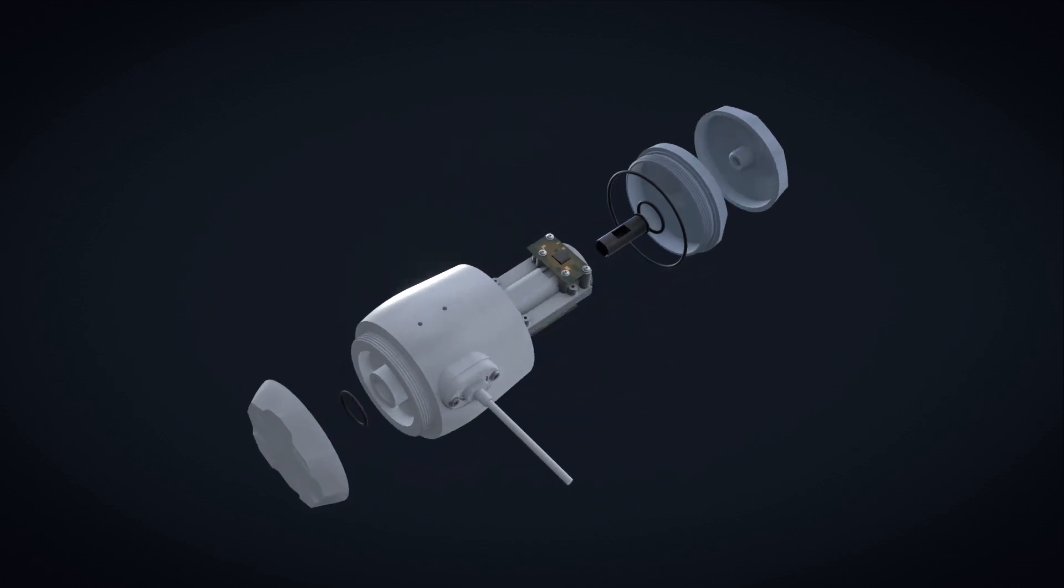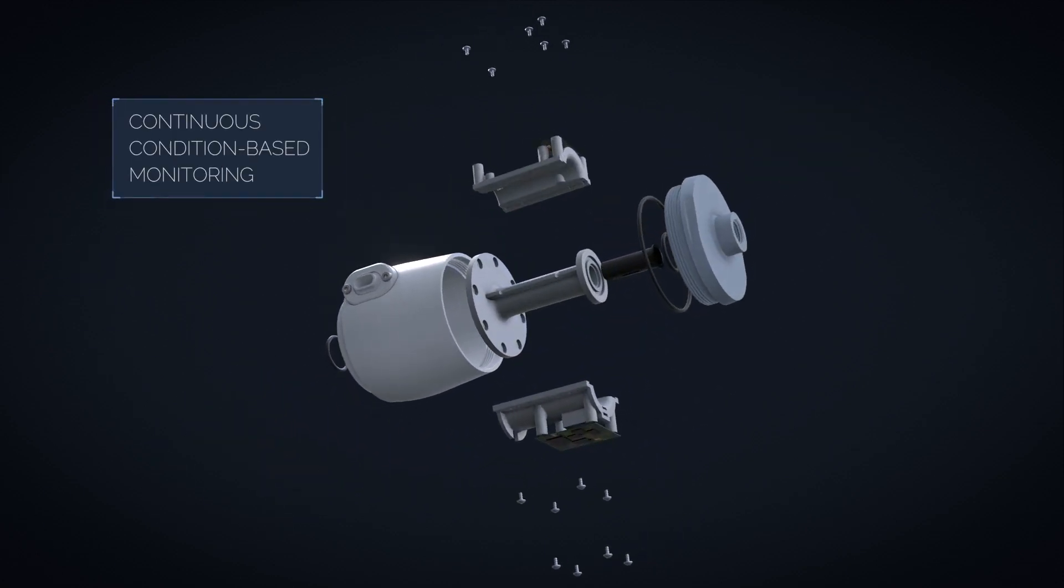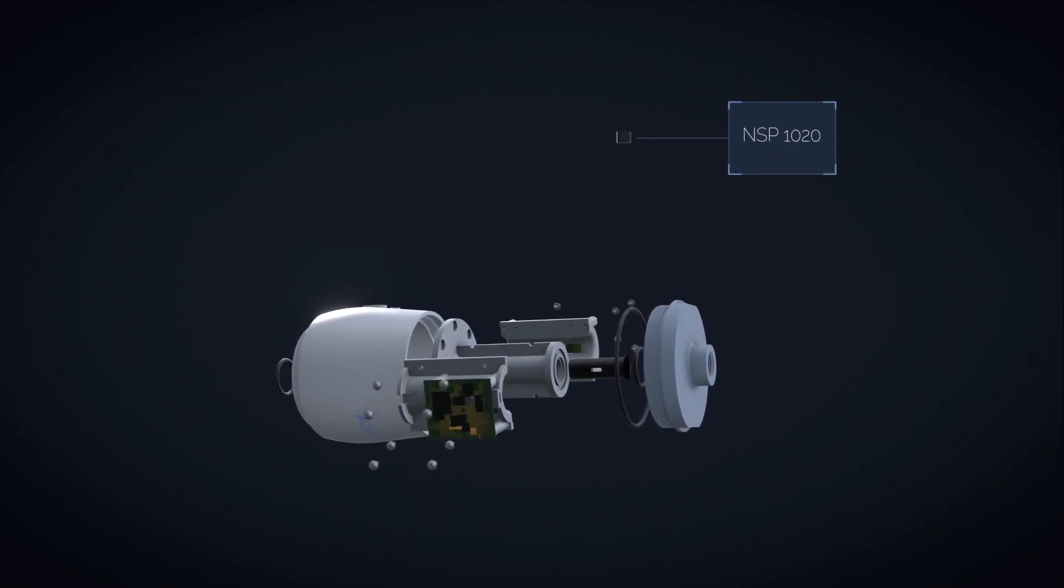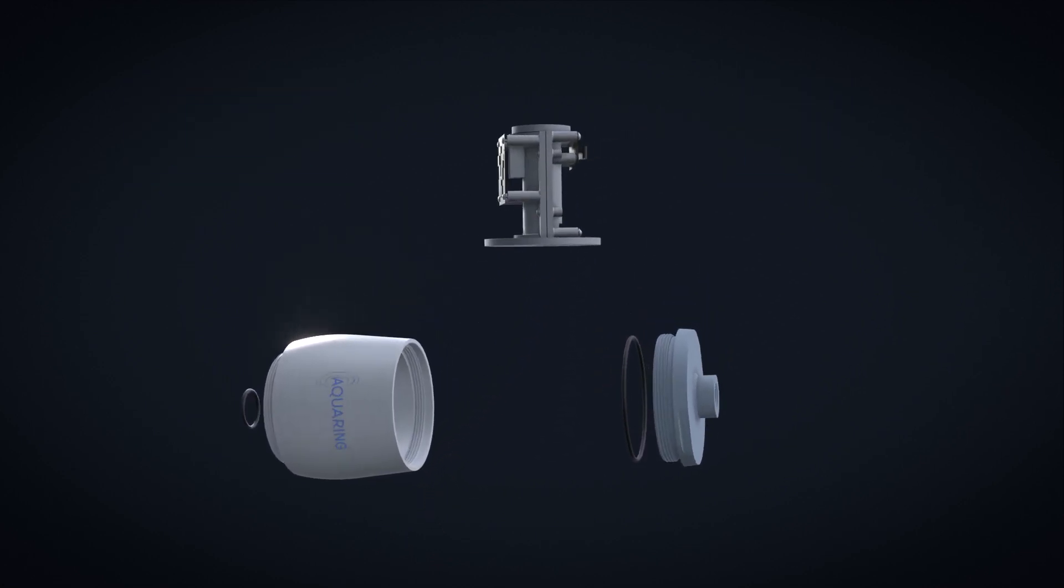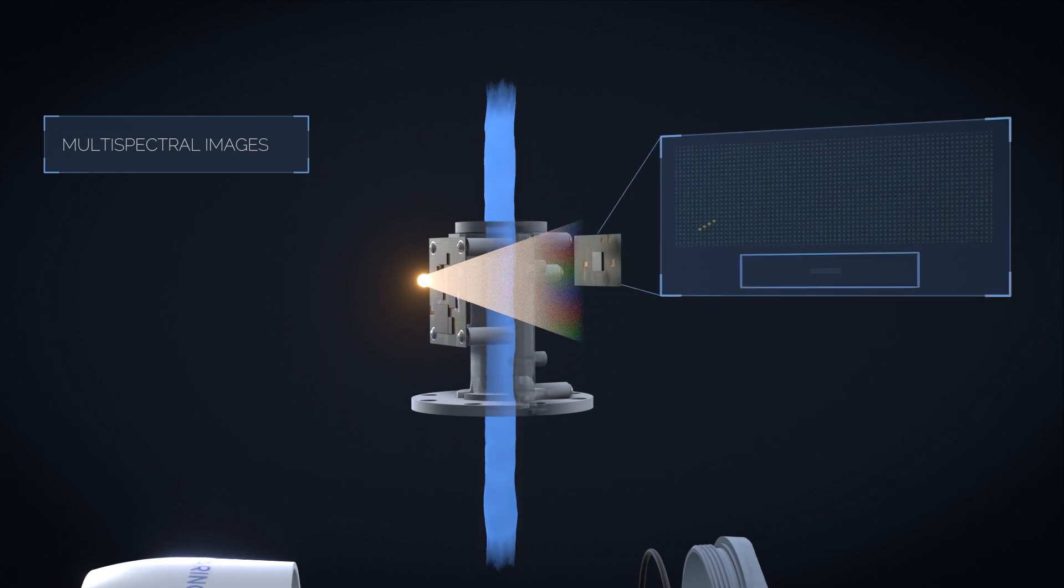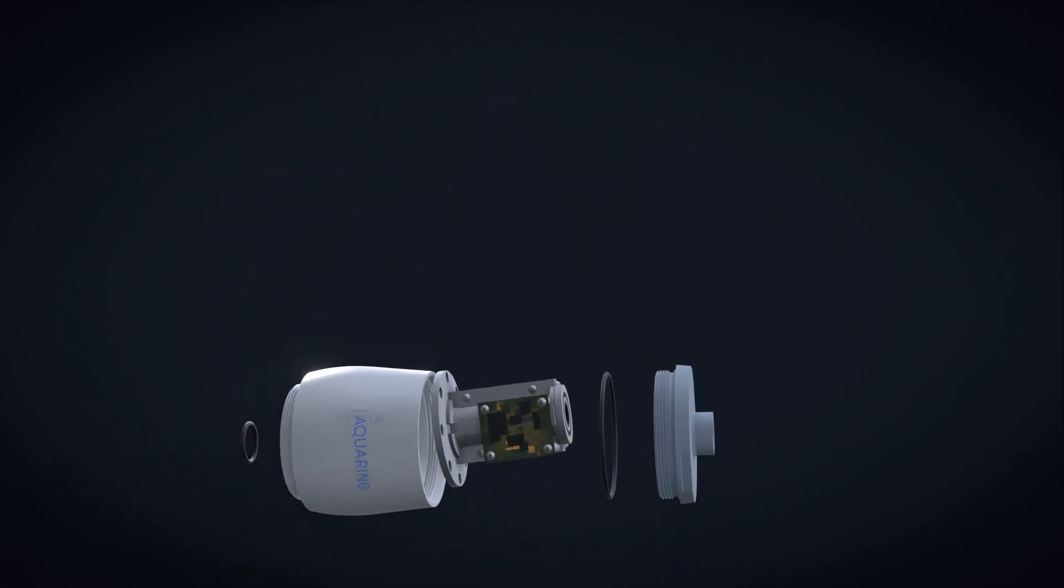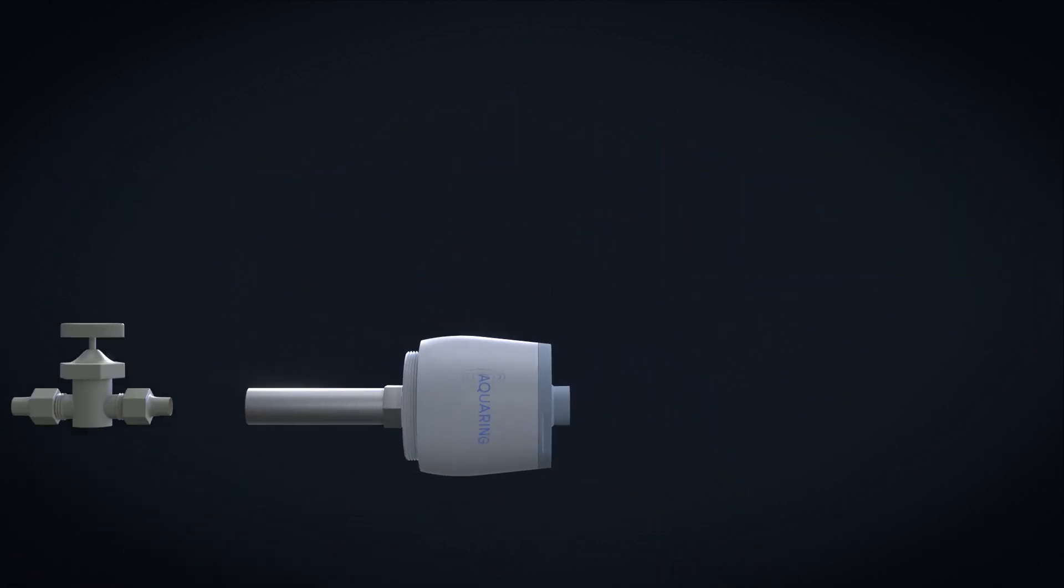The patent-pending AquaRing is a sensing device specifically designed for continuous condition-based monitoring. Based on the NSP1020 spectral chip, the AquaRing takes thousands of multi-spectral images per second in the visible and near-infrared spectrum, enabling an extensive data set for different applications.